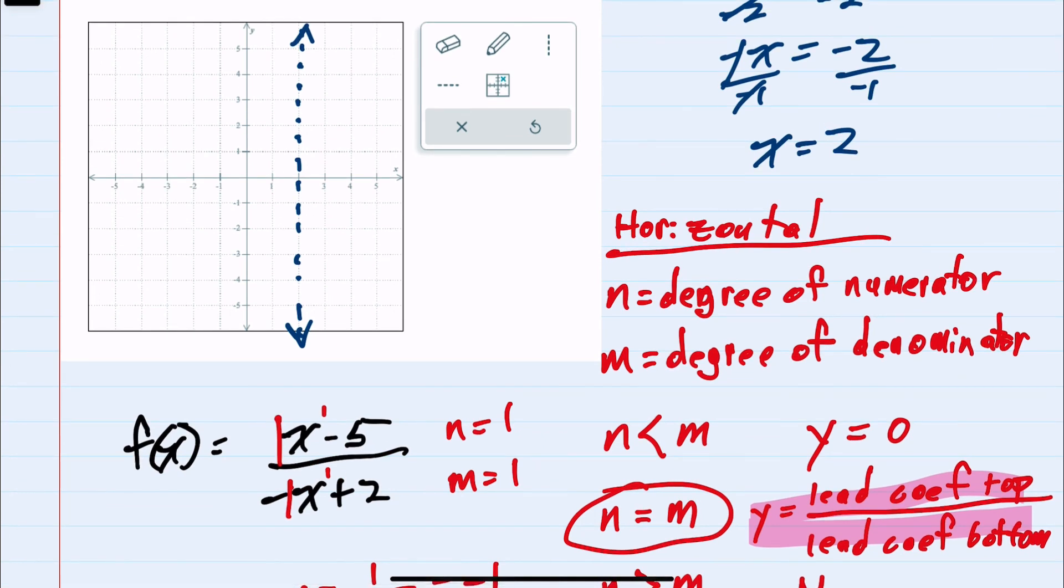Back on the graph, y equals negative 1 is the horizontal line going through the value y equals negative 1. These are our two asymptotes.